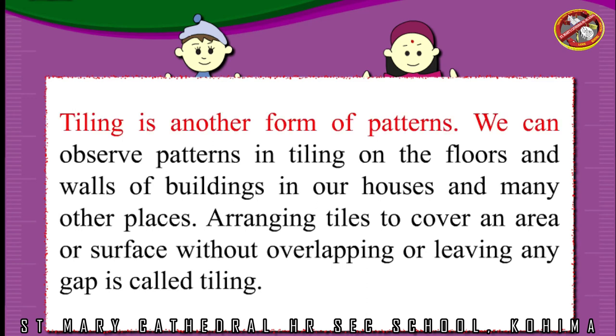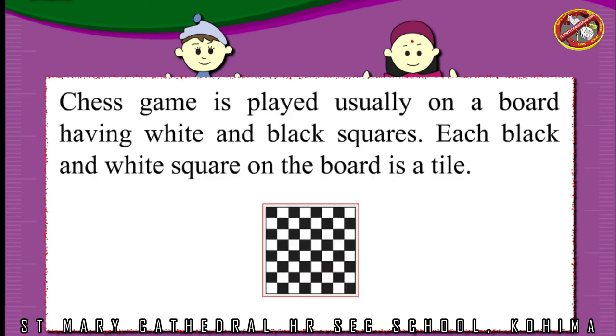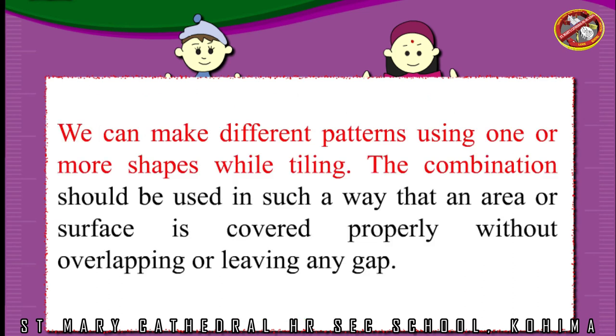Tiling is another form of patterns. We can observe patterns in tiling on the floors and walls of buildings, in our houses, and many other places. Arranging tiles to cover an area or surface without overlapping or leaving any gap is called tiling. Bathroom walls are usually covered with square or rectangular tiles. Chess game is played usually on a board having white and black squares. Each black and white square on the board is a tile. We can make different patterns using one or more shapes while tiling. The combination should be used in such a way that an area or surface is covered properly without overlapping or leaving any gap.